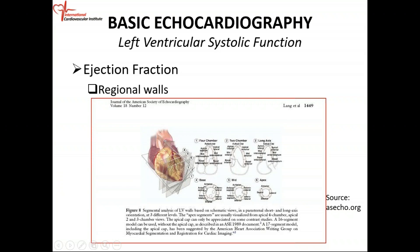At the base, you have your mitral valve, and you divide it into six segments just like the mid-cavity. The anterior wall is up top, the inferior wall is here. This is the lateral wall — closer to the anterior wall, you have your anterior lateral; closer to the inferior wall, you have your inferior lateral. Then this is the septum: closer to the inferior wall, your inferior septum, and closer to the anterior wall, your anterior septum.